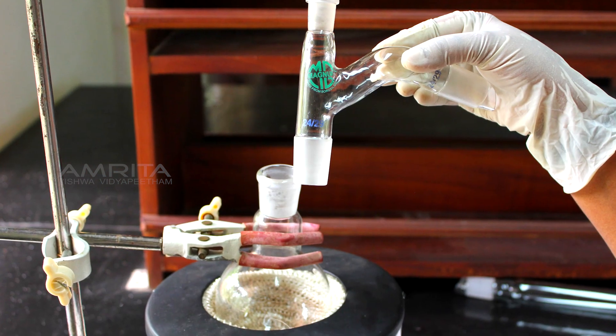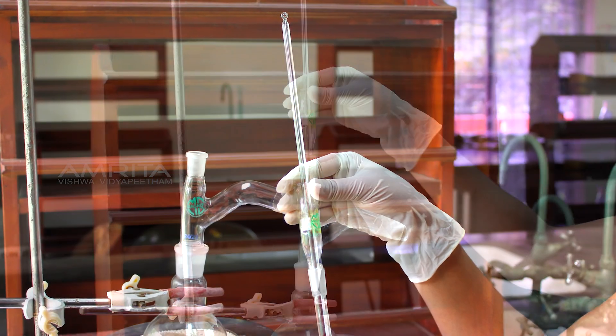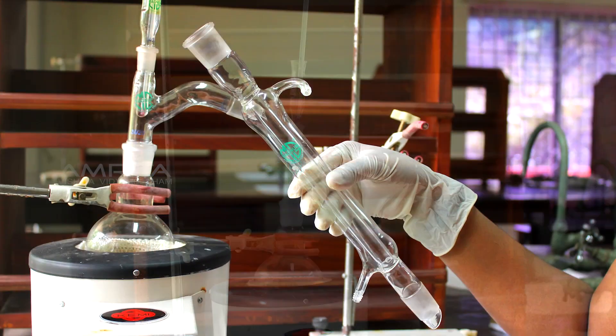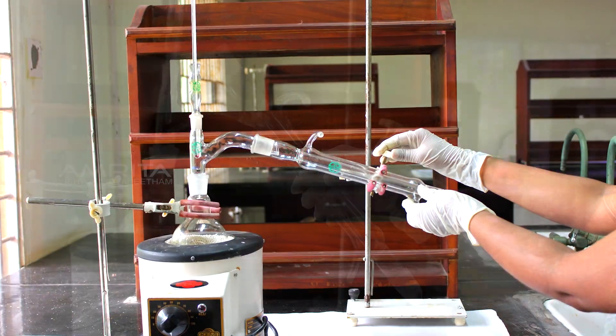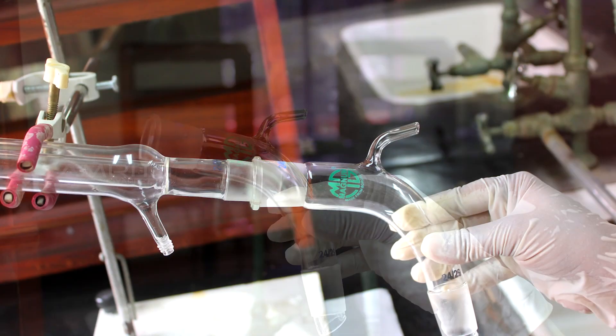Connect a distilling head to the RB flask and a thermometer adapter with thermometer to the distilling head. Connect a water condenser to the outlet of the distilling head and a vacuum adapter to the water condenser.